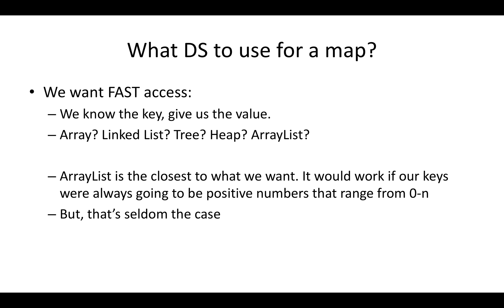An array list is closest to what we want. It would work if our keys were numbers 0 to 9 — we'd have an array of 10 items and say 'give us slot 3.' That's great if keys are positive numbers ranging from 0 to N, but that's not usually what we have. Think about a dictionary — those words aren't positive integers in a nice small range. So we need another approach that allows fast access — here's the key, give me the stuff — even when the key is not a small positive integer.